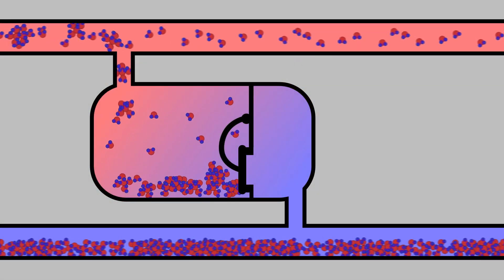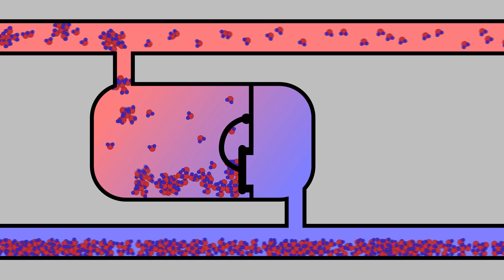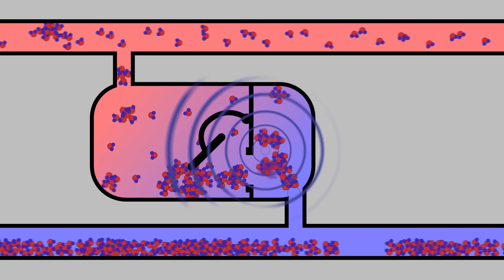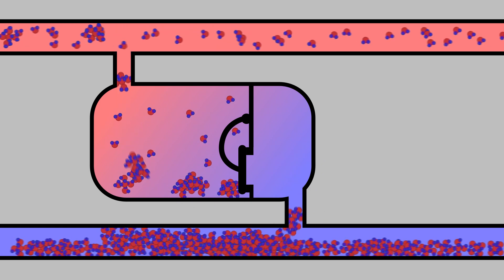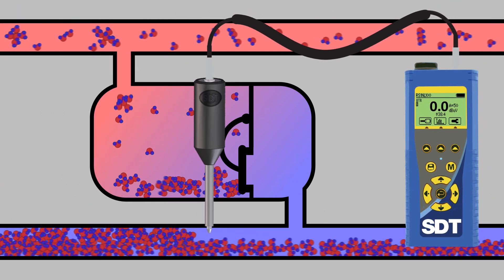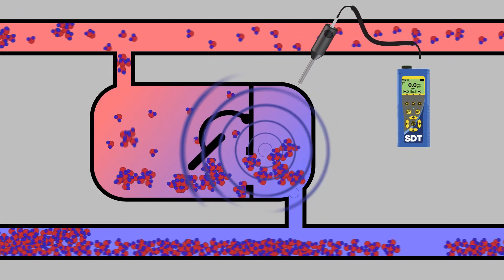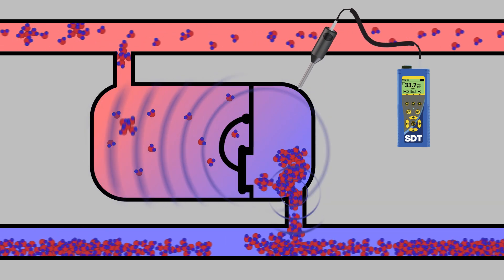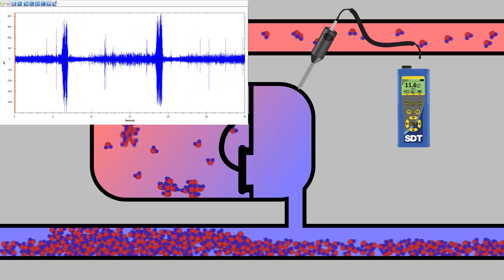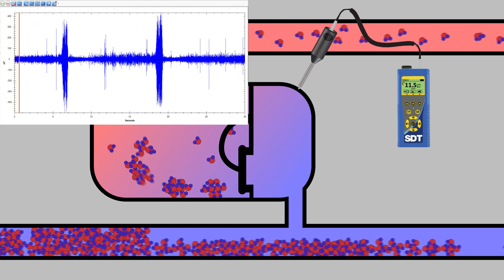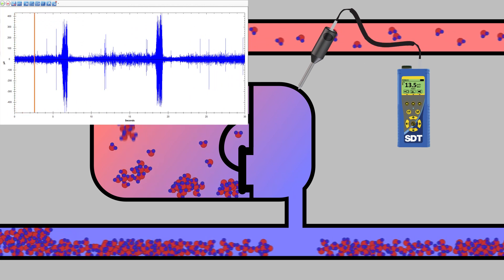During one full cycle, a trap will collect condensate, open a valve, purge contaminants, close the valve, and start again. Each of these events can be heard ultrasonically and captured as a dynamic signal to be viewed in the time domain. Diagnosis is quite easy. The trap's open-closed cycle can be clearly heard.